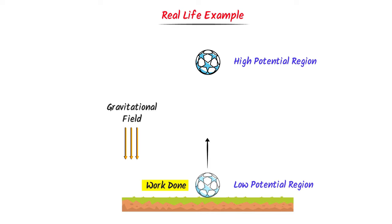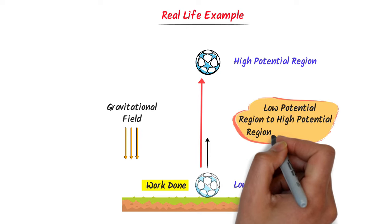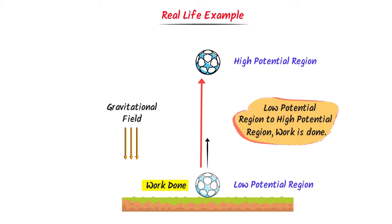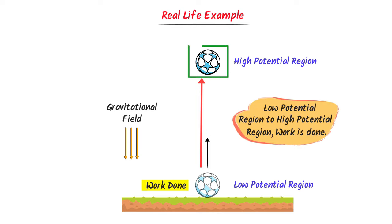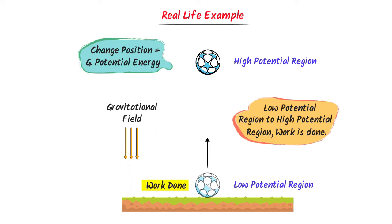First fact: if we want to move an object from low potential region to high potential region in a gravitational field, we need to do some sort of work on the object. Second fact: when we do some sort of work on the ball against the gravitational field, this work done is stored as potential energy. So when we change the position of an object in the gravitational field in the opposite direction, gravitational potential energy is stored in the object.